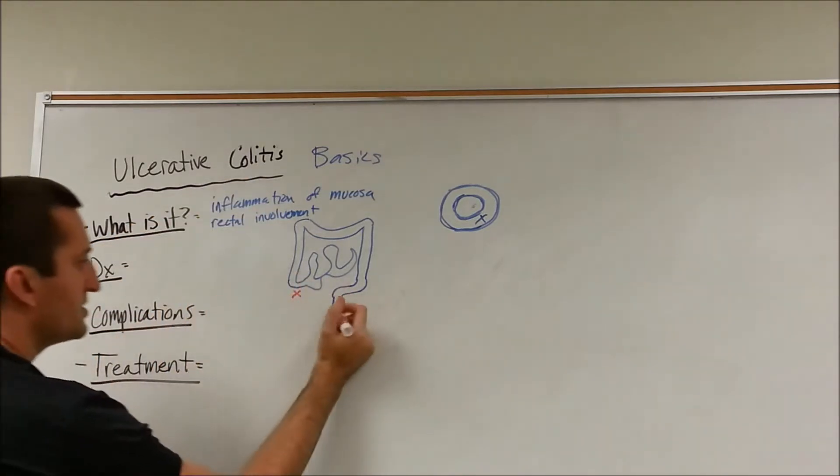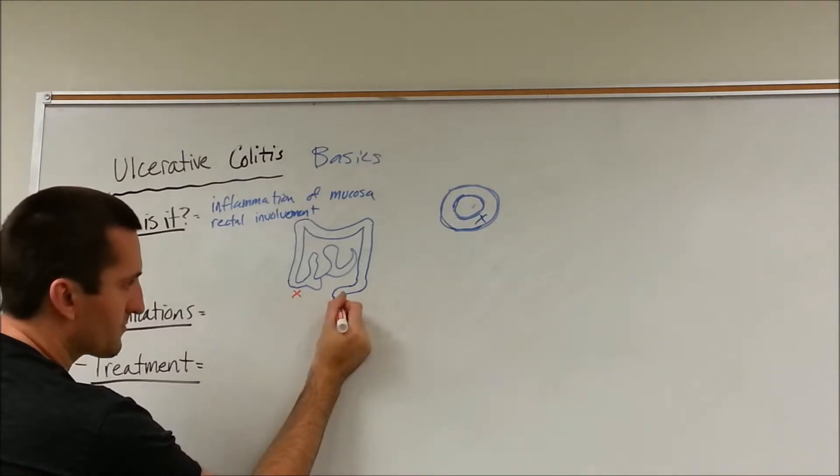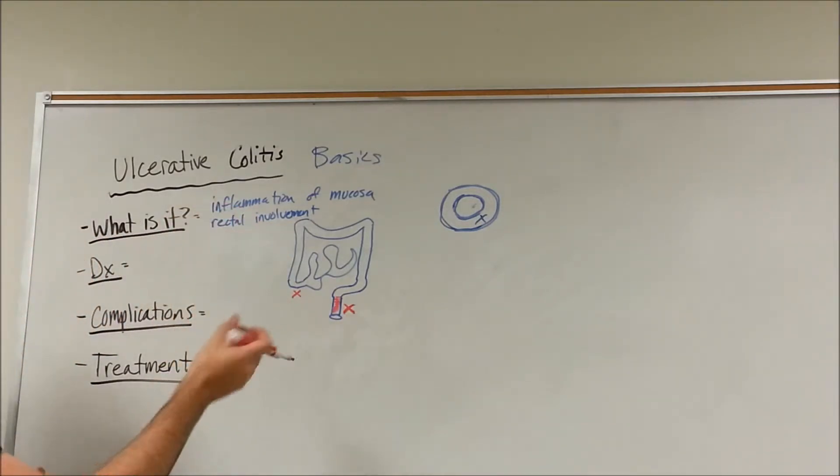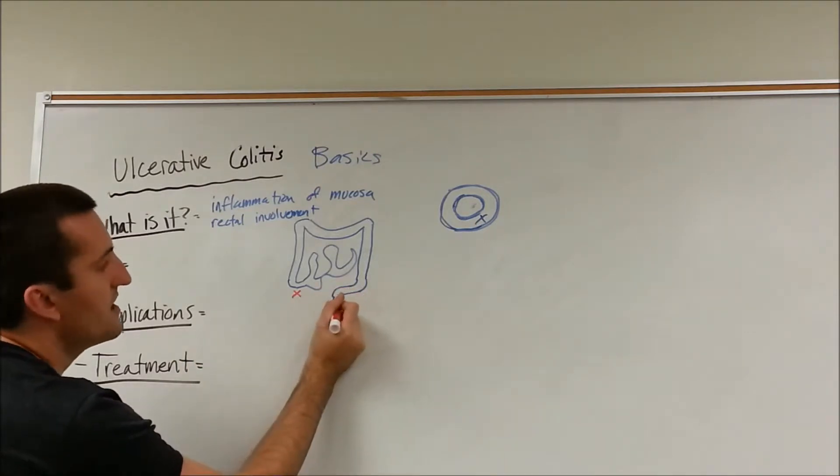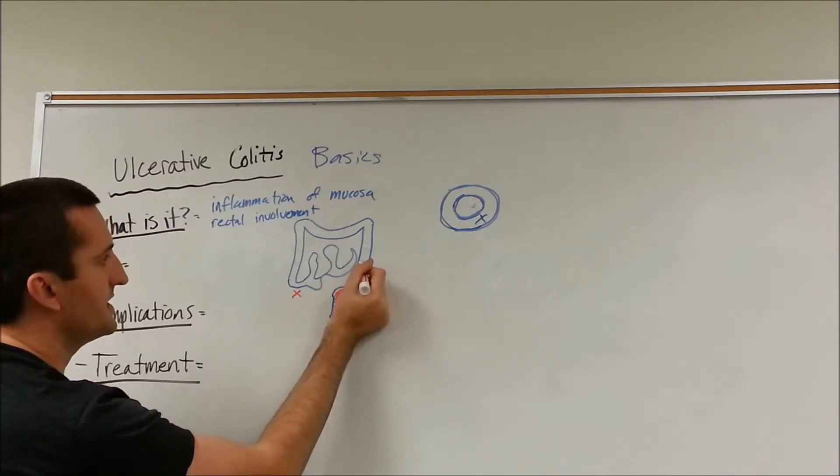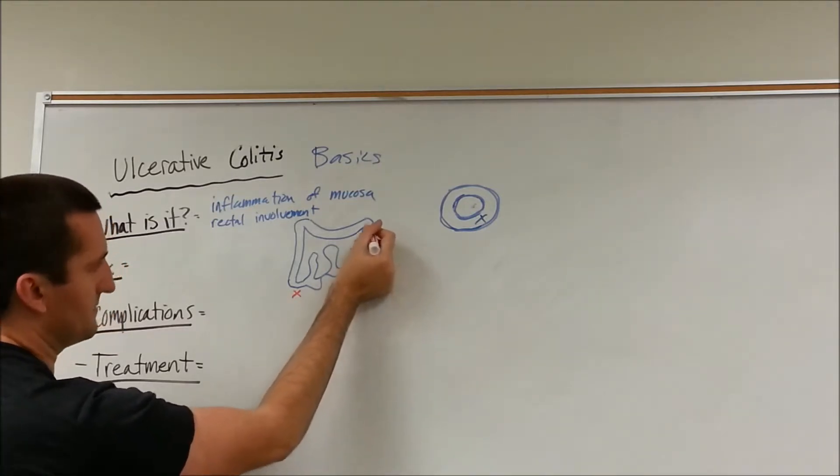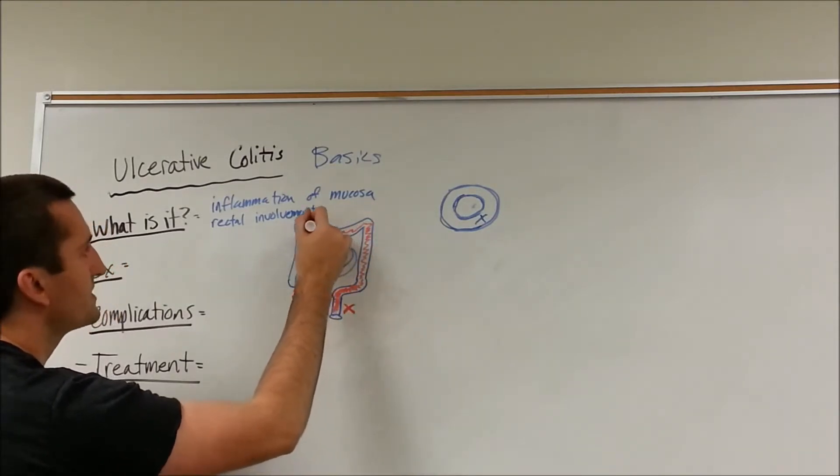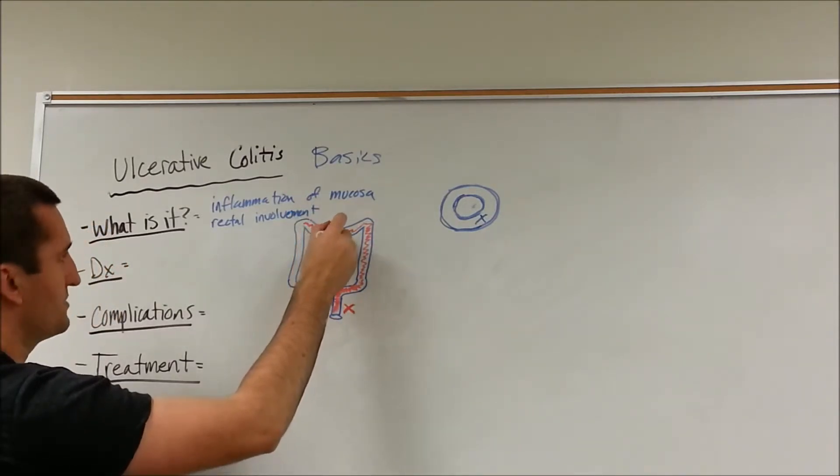So inflammation is always going to start here in the rectum. And the red is going to stand for the inflammation or the colitis and the ulceration. So you may also see it extend into the sigmoid, and that may be it. But you may also see it extend even further and get worse symptoms of ulcerative colitis. It could involve the transverse, or it could just involve half of the transverse.